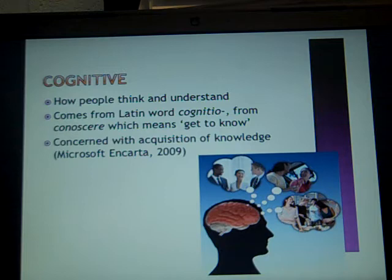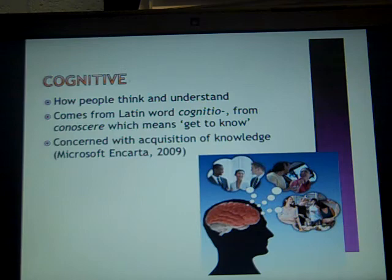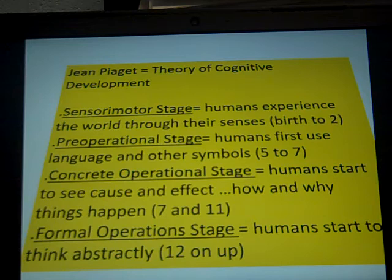We're going to talk more about the cognitive theory of personality development later. The cognitive approach refers to how people think and understand. Cognitive processes include thinking, motivation, perception, and intelligence. It comes from the Latin word 'cognitio,' which means 'to get to know' — it's concerned with the acquisition of knowledge. You may have seen this in Introduction to Psychology or another social science class. There are different theories of cognitive development, and these all impact and reflect personality development. You'll want to know these stages of cognitive development.